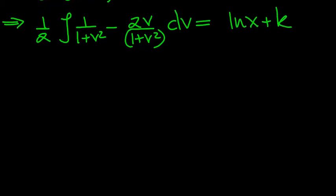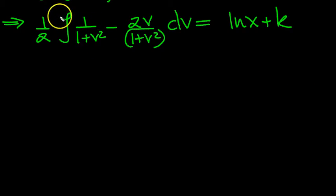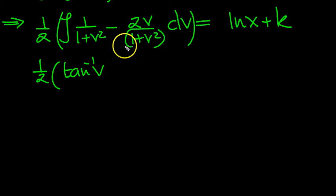So what have we got then? It's half of this whole thing, mind. So it's half of this integrates to arctan v minus. And this is a log, isn't it? Because this differentiates to 2v. So we'll get ln 1 plus v squared.